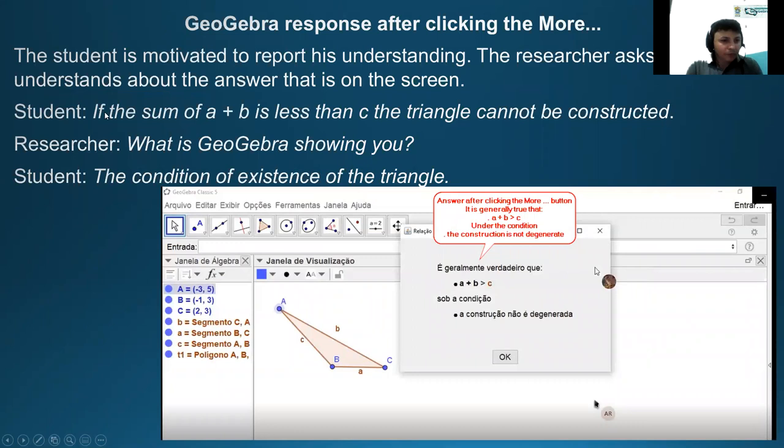In this moment, he conjectured about the condition of the existence of the triangle. Here I have the same information, but the research in the same window with the algebra, and the student clicks the More button. In this moment, GeoGebra shows the information. Once they click the algebra, a plus b is greater in relation to c. This information is sufficient for the students to see that if the sum of b plus bc is less than c, the triangle cannot be constructed. At this moment, the research makes a new question: What is GeoGebra showing you? The students will answer with the necessary answer for the question, the condition of the existence of the triangle.